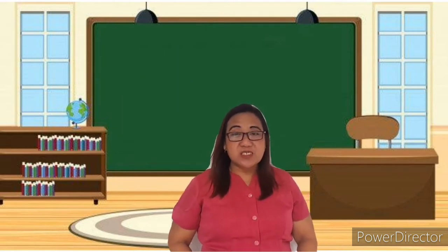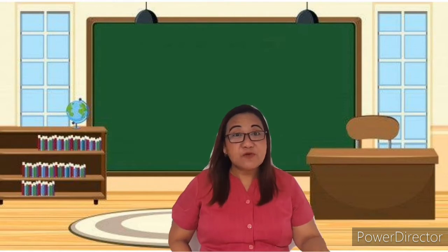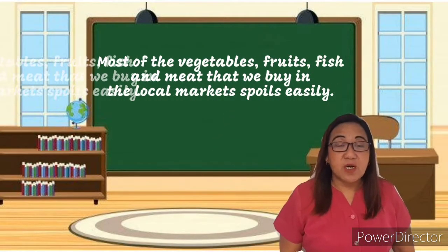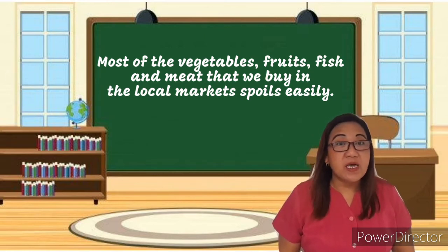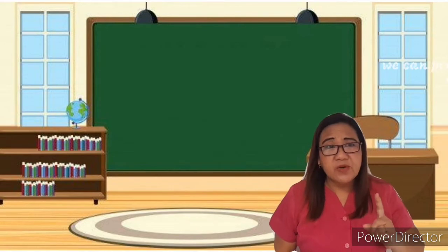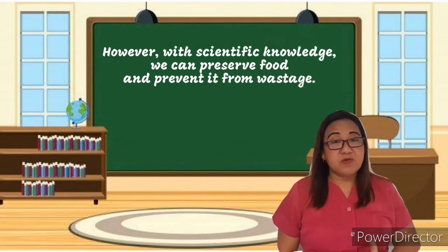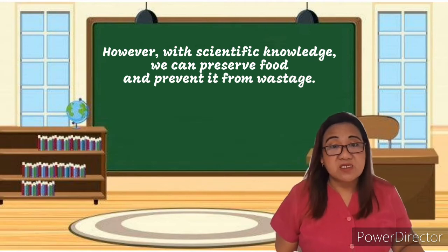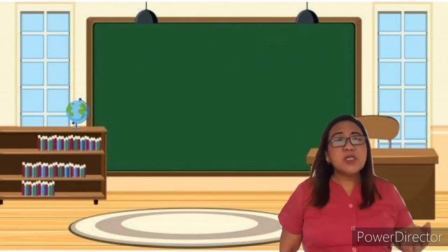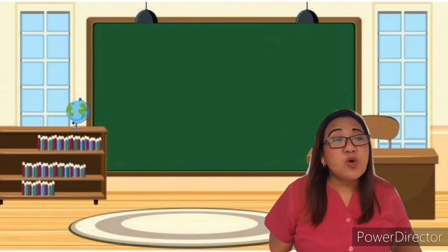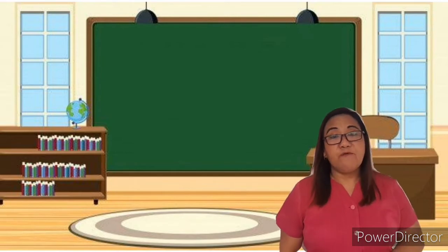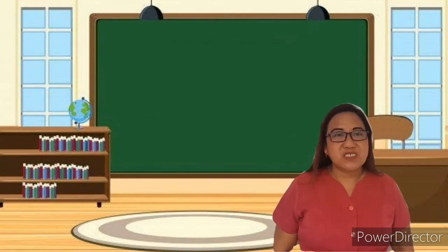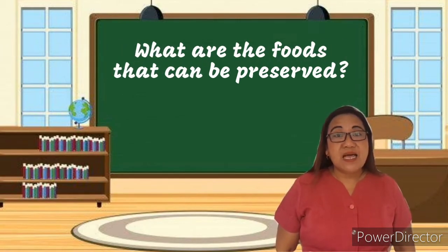One of the convenient ways during difficult economic times is food preservation. Most of the vegetables, fruits, fish, and meat that we buy in the local market spoil easily. However, with scientific knowledge we can preserve foods and prevent wastage. This module is designed and written to show you the different methods used in preserving vegetables, fruits, fish, and meat. What are the fruits that can be preserved?